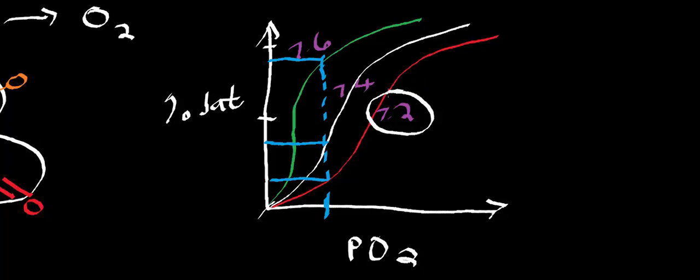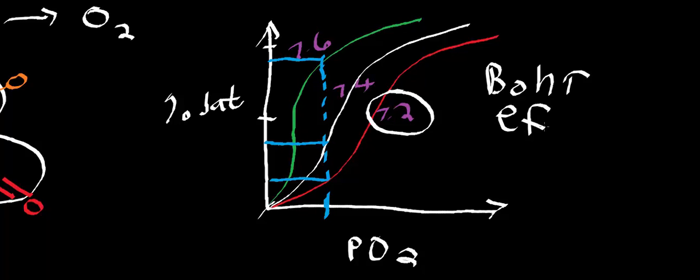pH 7.2 represents the highest concentration of hydronium in the blood. When you have low pH at constant PO2, you have lower percent saturation. This is an experimentally determined relationship. When you have high hydronium concentrations, the histidines are binding the protons, hemoglobin changes conformation, and it causes hemoglobin to move to the T state. In the T state, oxygen dissociates. This effect — where percent saturation changes with the change in pH — is called the Bohr effect.